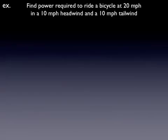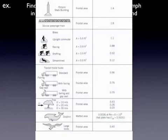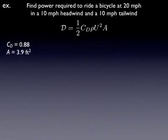Okay, so let's do an example. Let's find the power required to ride a bicycle at 20 miles per hour in a headwind and with a tailwind. So two different cases. To calculate power we need to know drag. So we're going to use the drag equation first. Let's look up for a bicycle. I'm going to use a racing bicycle. So that gives me a coefficient of drag of 0.88 and an area of 3.9 square feet. And I can look up the density for air which is typically around this.